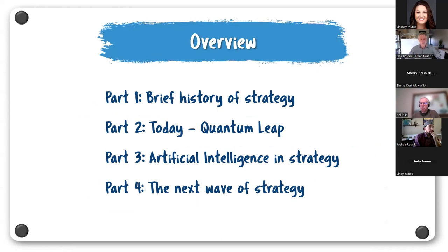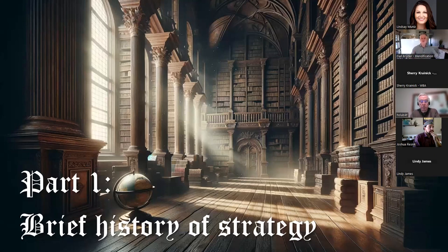Here's a quick overview — four steps today. First, a brief history of strategy. Then part two: the quantum leap in technology. This is not a moderate advance; I'd argue it's potentially the biggest technological advancement our human race has ever experienced in a short period of time. Part three: artificial intelligence and how it relates to strategy right now. And then we'll look into the future — strategy's role is bigger than just planning.